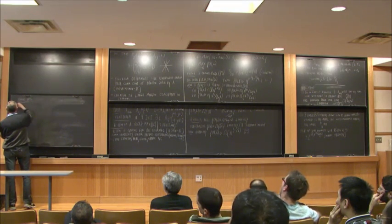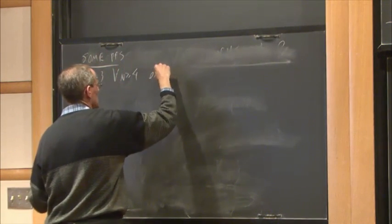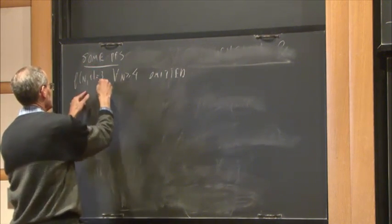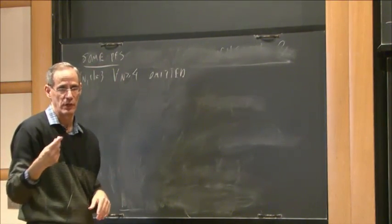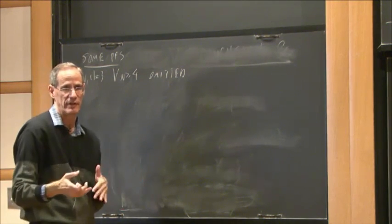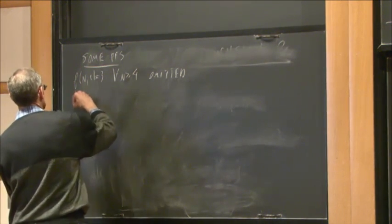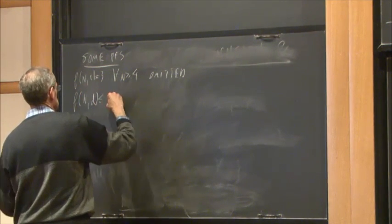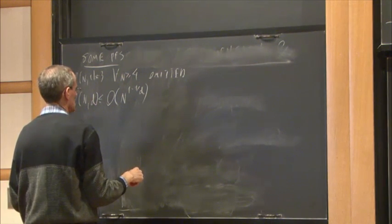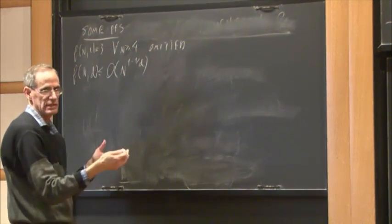Let me show you some proofs. f(n, 1) = 3 for all n ≥ 4 is omitted — it takes some time, but we know it's at least 3 from the 4×4 matrix example, which has VC dimension 1. Now the upper bound: f(n, d) is at most n^{1 − 1/d} times a constant. This proof is short but uses something.